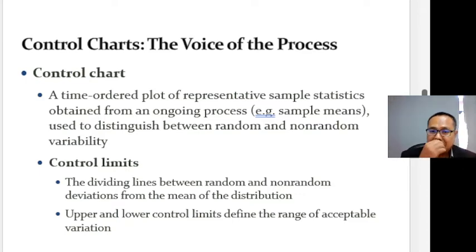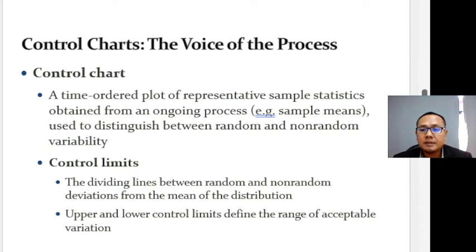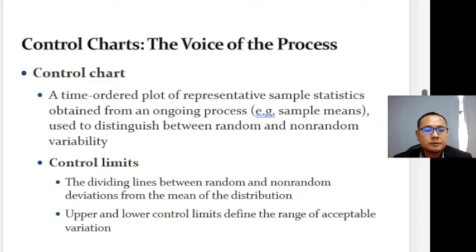An important tool in statistical process control is the control chart. A control chart is a time-ordered plot of a sample statistic obtained from an ongoing process. It is used to distinguish between random variability and non-random variability. Control limits are the dividing line between random and non-random deviation from the mean of the distribution.